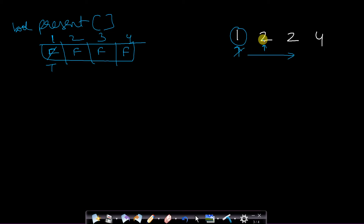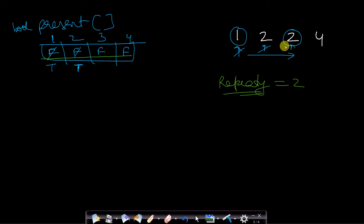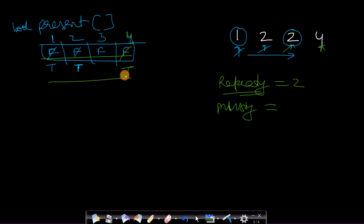You move to the next element, 2. For 2 it is false, so you make it true. You move to the next element, 2 again. Now you go to index 2 and you can see it is already true. So when you go to an element and find it is already true, that element must be repeating — so the repeating element is 2. You then move to the next element, 4, and make it true since it is false. For the missing number, you traverse the present array and as soon as you find a false, that is your missing number — which is 3 in this case.